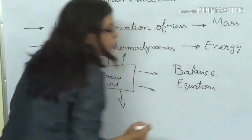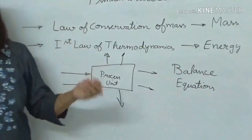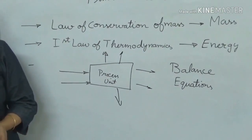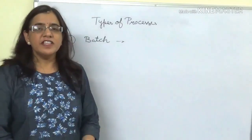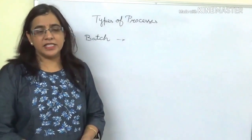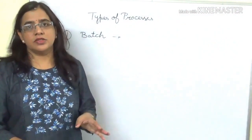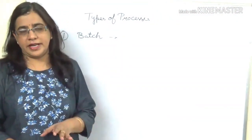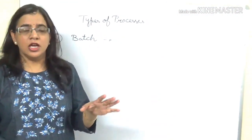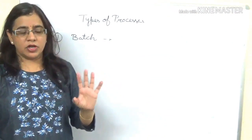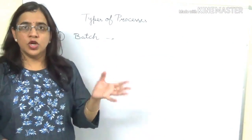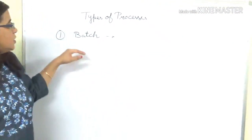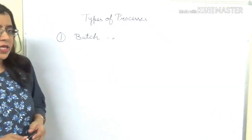These balance equations take different forms for different types of processes. When we write balance equations, we have to consider which type of process we are handling. In chemical engineering, we divide our processes into three main categories. The first is the batch process.